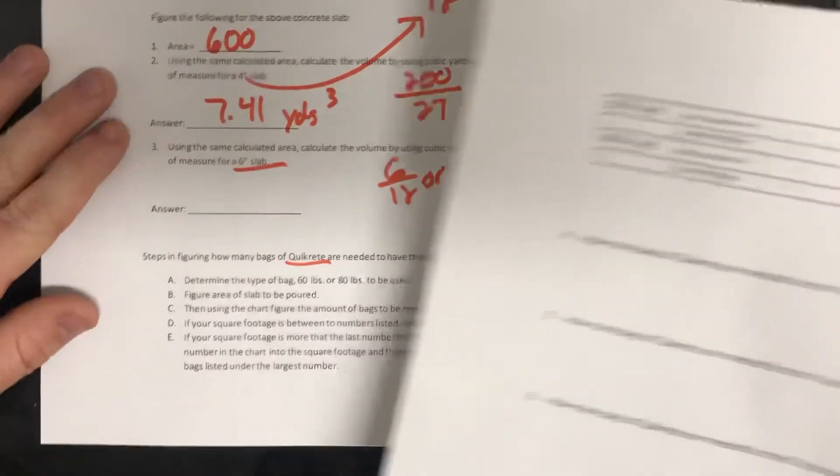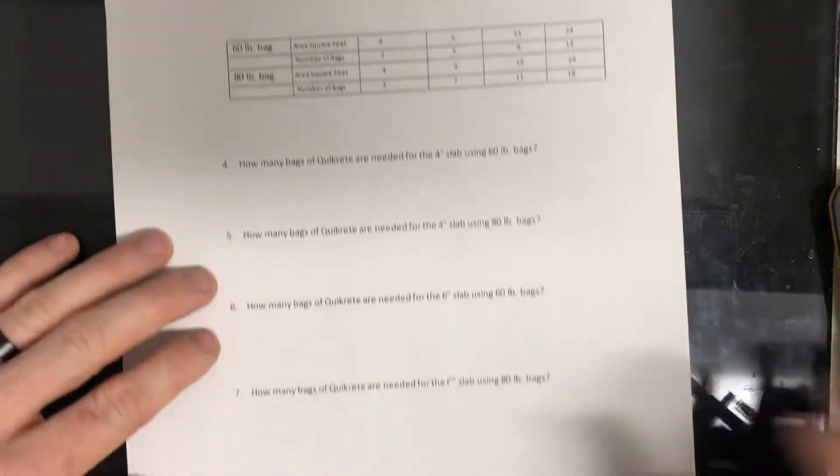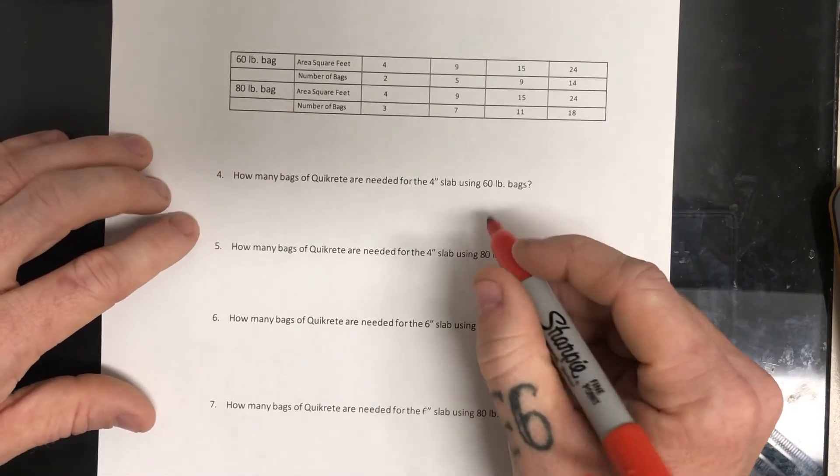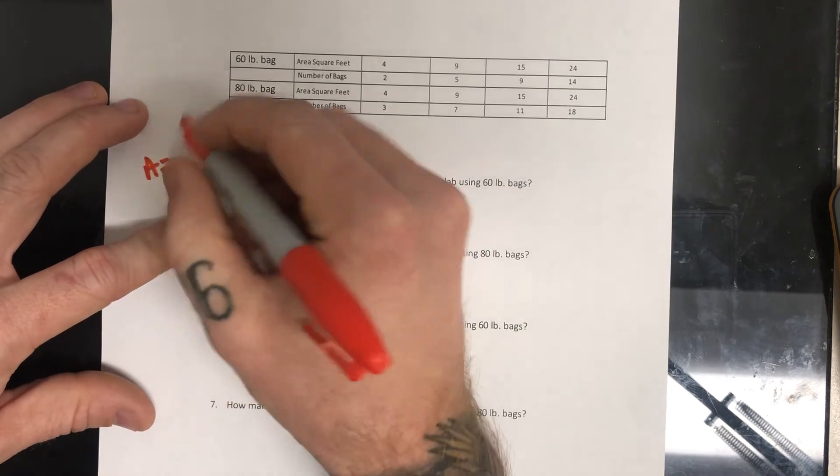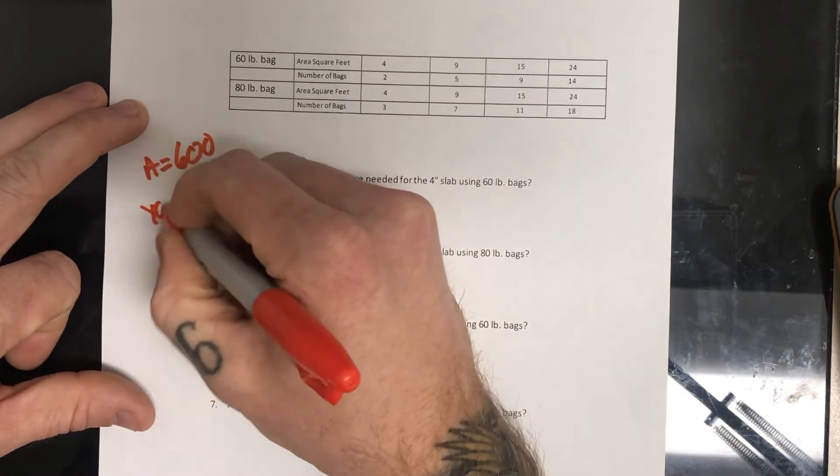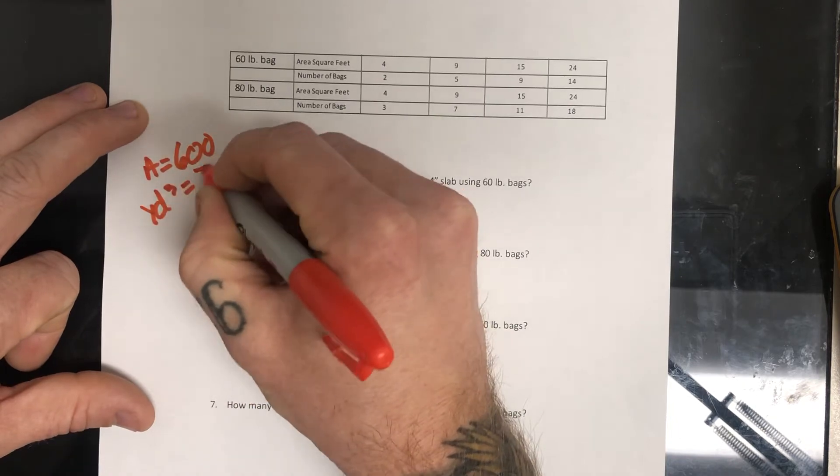So the first thing we're going to do is we're just going to kind of look at the chart and we'll start with the 60 pound bags. So remember that our area was 600 and our yardage cubed was 7.41.